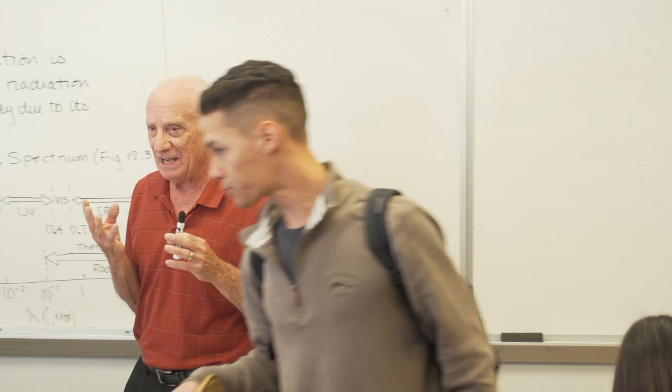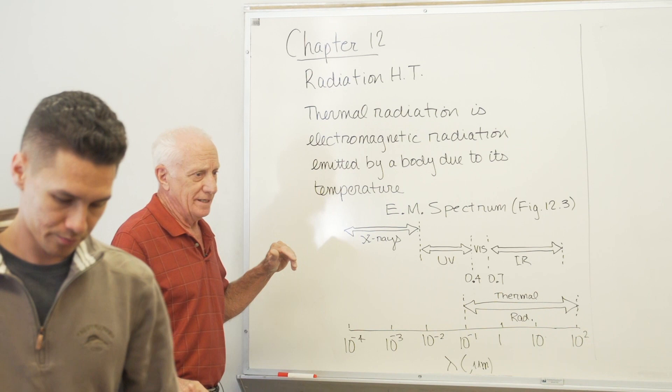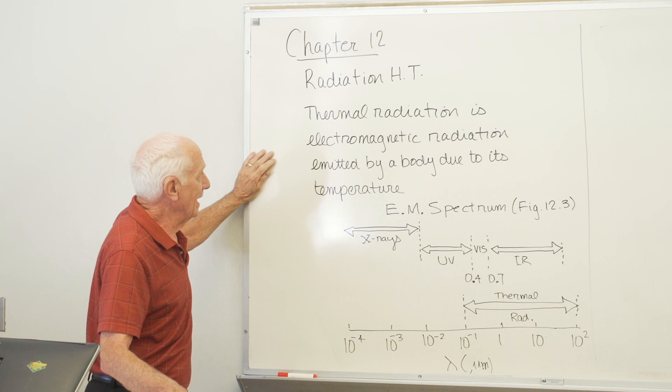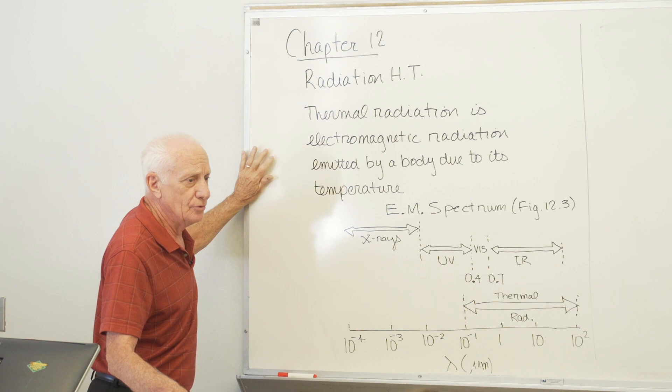So let's first of all define what we mean by thermal radiation. Thermal radiation is the heat transfer part of radiation. We're going to consider this to be electromagnetic radiation emitted by a body due to its temperature. The two important things are: electromagnetic radiation, and that it's due to the body's temperature.